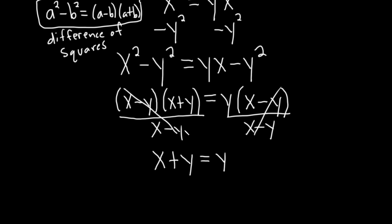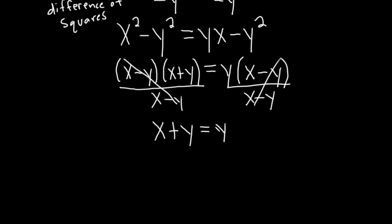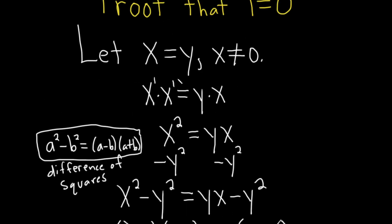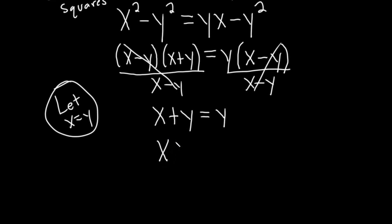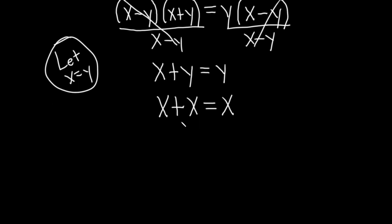Now the question is what do we do next? Well, if you recall at the beginning we said that x is equal to y. So we can replace the y with x. That gives us x plus x equals x. And x plus x is just 2x, so we have 2x equals x.